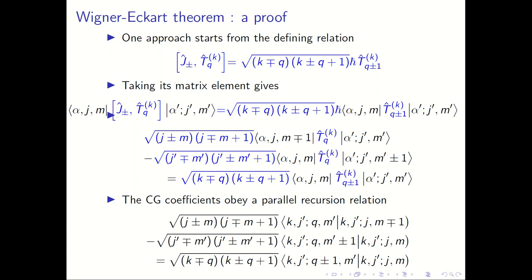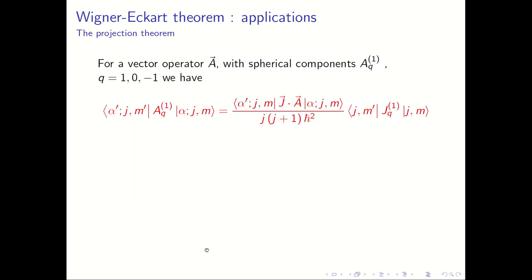Let me move on to how you actually use the Wigner-Eckart theorem. I will give two examples. If this had been an atomic, molecular, nuclear, or particle physics course, the whole course would be full of applications. But let me point out: the theorem says that for a vector operator A whose spherical components are A^(1)_Q — a vector operator is a spherical tensor of rank 1, so K = 1 — where Q can take values +1, 0, and −1.